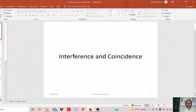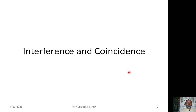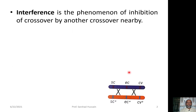Dear students, let us discuss another topic: Interference and Coincidence. These two terminologies you have already come across during the previous lectures while discussing the frequency of crossing over. Interference is basically a phenomenon which inhibits the crossing over at its nearby point — a phenomenon in which one crossing over inhibits another crossing over at its nearby location.